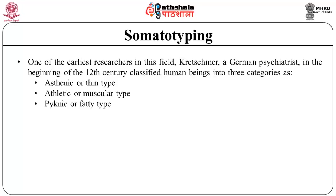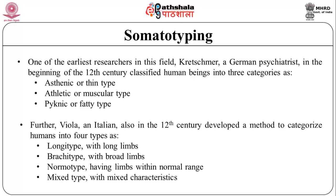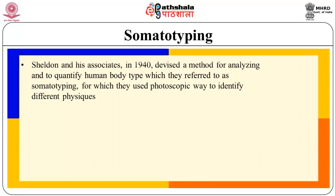One of the earliest researchers in this field, Kretschmer, a German psychiatrist in the early 20th century, classified human beings into three categories: asthenic or thin type, athletic or muscular type, and pyknic or fatty type. Further, Viola, an Italian also in the 20th century, developed a method to categorize humans into four types: longotypes with long limbs, brachytypes with broad limbs, normotype having limbs within normal range, and mixed type with mixed characteristics.